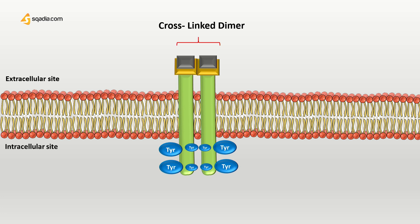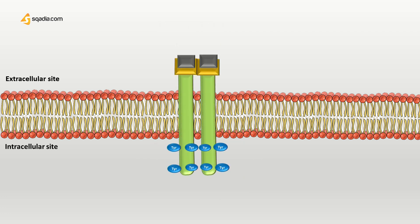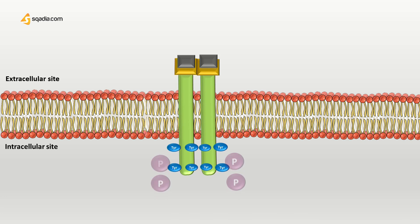Once the tyrosines are active, they can start getting phosphorylated. Each RTK in the dimer phosphorylates the tyrosine on the other RTK — the whole process of one phosphorylating the other is called cross-phosphorylation. Since ATP is present inside the cell, the tyrosine will cause it to become ADP with a phosphate group, and each tyrosine picks up this free-floating phosphate group from ATP. One receptor tyrosine kinase phosphorylates the other, so they need to act in pairs for proper functioning.